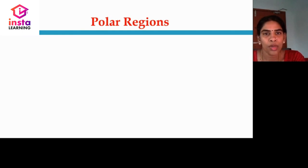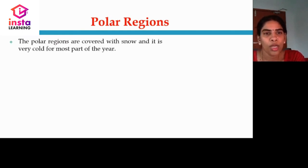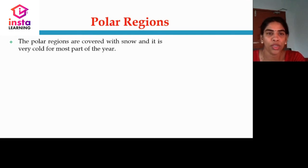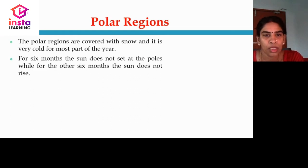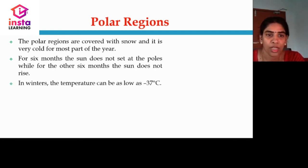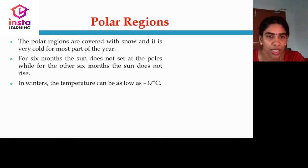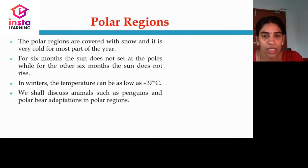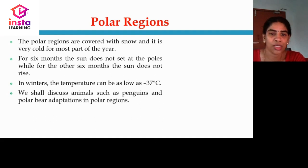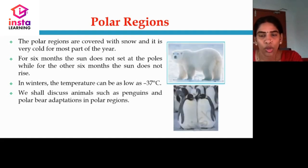Let us discuss about polar regions. The polar regions are covered with snow and it is very cold for most part of the year. For 6 months, the sun does not set at the poles, while for the other 6 months, the sun does not rise. In winters, the temperature can be as low as minus 37 degrees Celsius. We shall discuss animals such as penguins and polar bears, which are the common animals that can be seen in the polar regions.